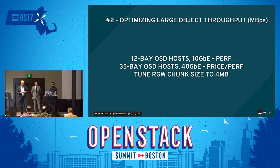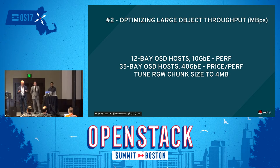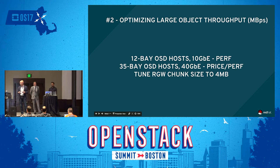Number three: optimizing for large object throughput. From a purely performance standpoint, a 12-bay OSD host was optimal. From a price performance standpoint, a 35-bay host was optimal. Note the bottom bullet: we received about a 40% performance boost by tuning one of the RGW tunables — the chunk size. 40% was material enough for us to note.